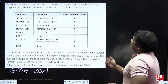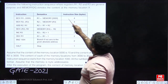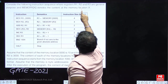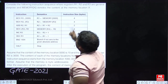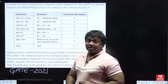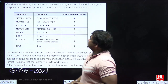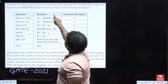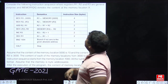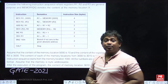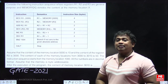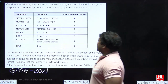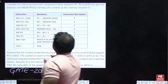Consider the following instruction sequence where R1, R2, R3 are general purpose registers, and memory[X] denotes the contents of memory location X, where X is the memory address.